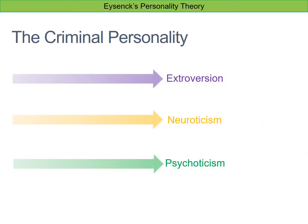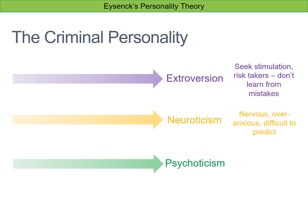Looking at those personalities in more detail: people who are extroverts have a brain that is generally under-stimulated biologically, so they seek stimulation in order to raise that level. As a result, they're risk takers and they don't learn from their mistakes. People who are neurotic tend to be nervous and overly anxious, which makes their behaviour quite difficult to predict — they're more likely to act in an impulsive and unpredictable way.